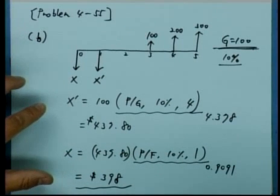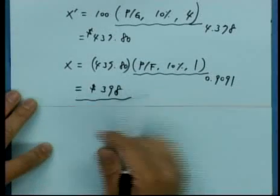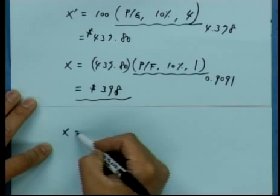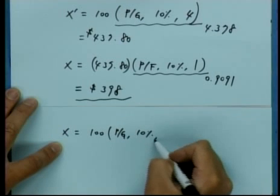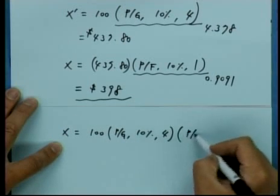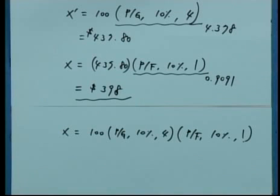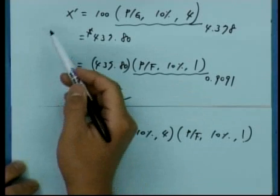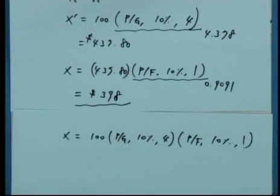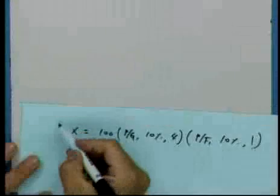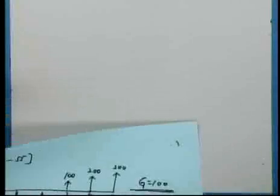These two procedures can be combined: x equals $100 times (P/G, 10%, 4 periods) times (P/F, 10%, 1 period), which is exactly the same as the two-step procedure.